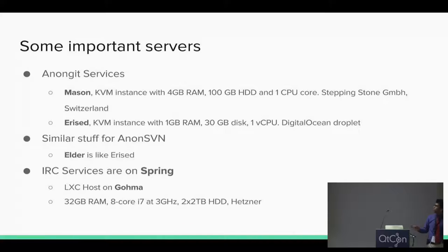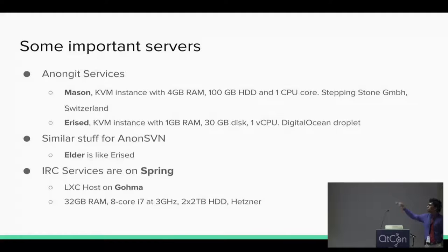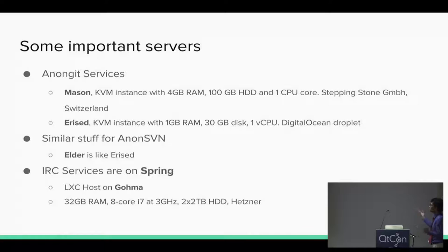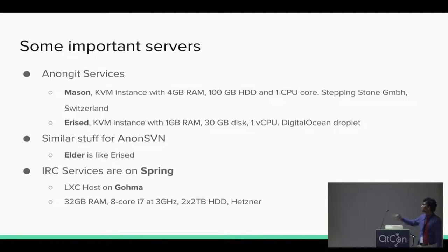Let's get started with some important servers. Anon Git — the anonymous read-only Git network — runs on only two servers. One is Mason, in Switzerland, a KVM instance with 4 GB of RAM, 100 GB of hard drive space, and one CPU core, donated by Stepping Stone Switzerland. It runs Debian. Our Git repositories total around 75 GB, so 100 GB is enough — this is only Git; the SVN is another 90 GB or so. Erisid is one of our newer servers in San Francisco — a DigitalOcean droplet with 1 GB of RAM, 30 GB disk, and a 100 GB block storage device attached to host the repositories.